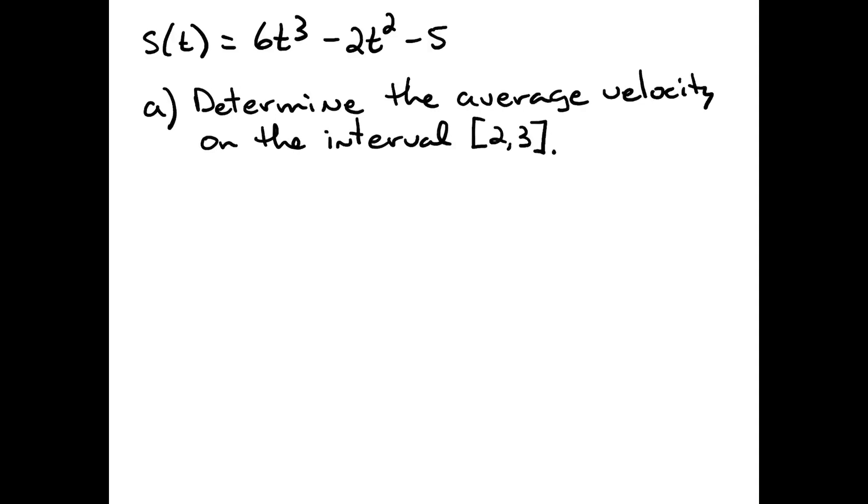Now if you recall average velocity, you're going to do the average rate of change formula and you're going to do it to the position function. So in other words, I'm going to do s of 3 minus s of 2 all over 3 minus 2. This should look familiar to you as your average rate of change function. So when I want average velocity, I do the average rate of change formula with the position function.